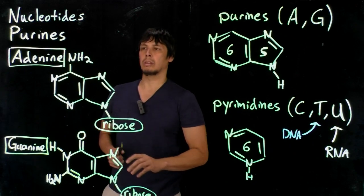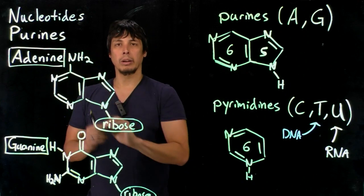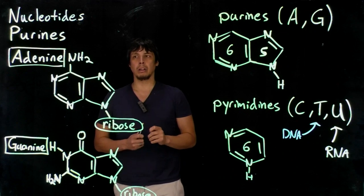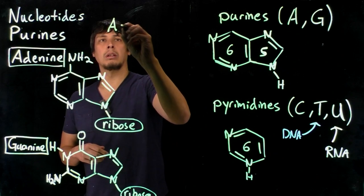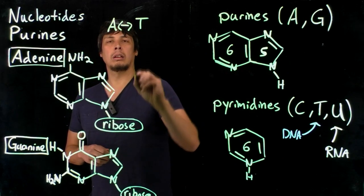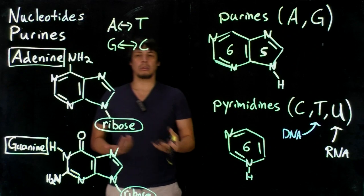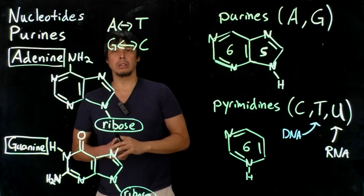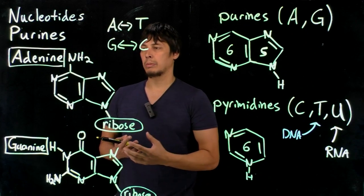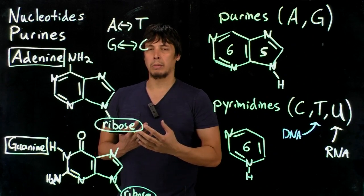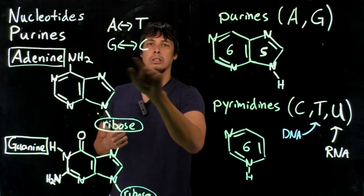Notice how the different structures change whether there are hydrogen bond donors or acceptors on the ring. This is really important for what's known as base pairing. As you may remember, A base pairs with T in DNA, and G base pairs with C in DNA. Think about what acts as a hydrogen bond donor or acceptor, and consider how that affects the complementarity between A and T and G and C.